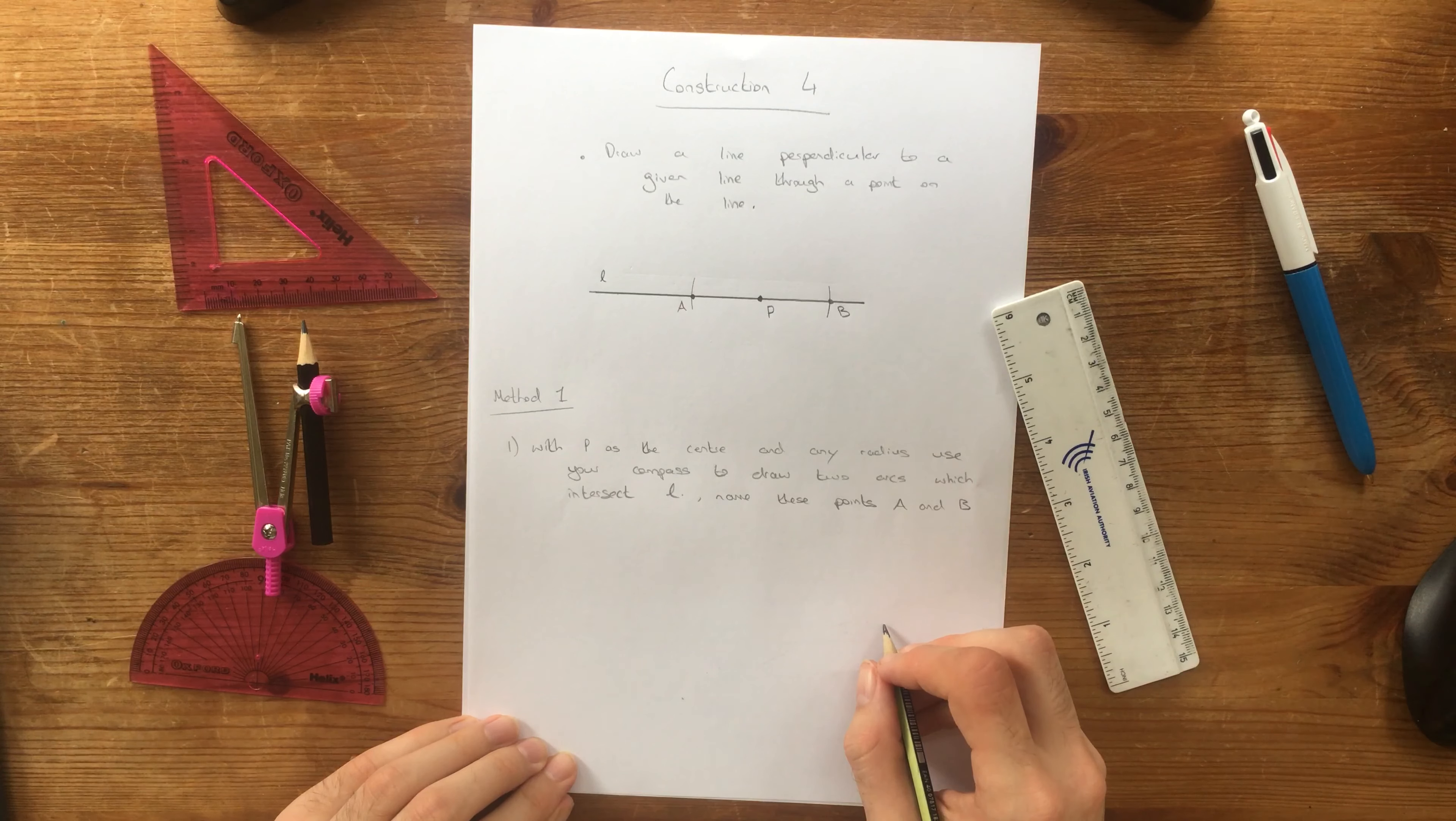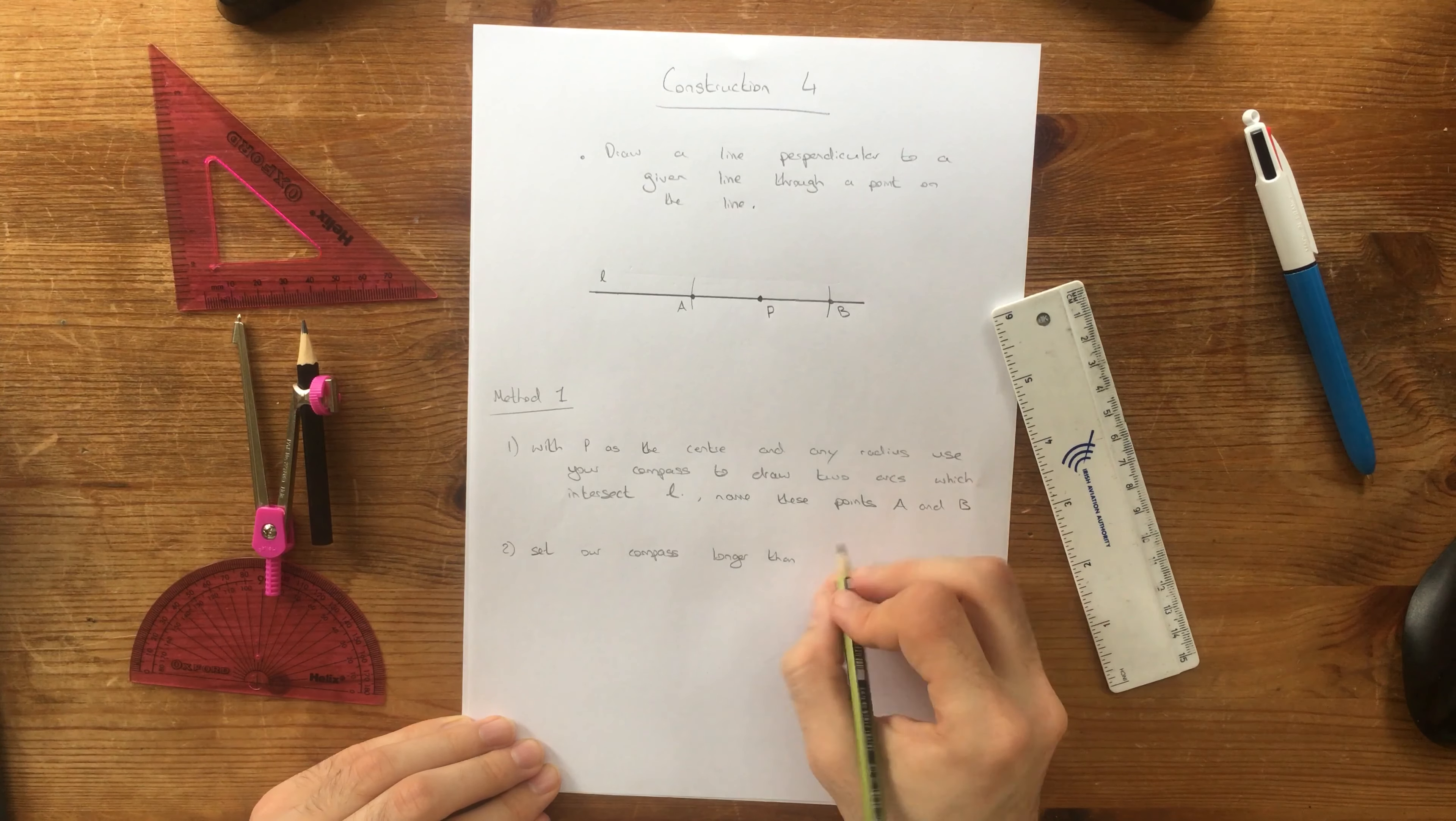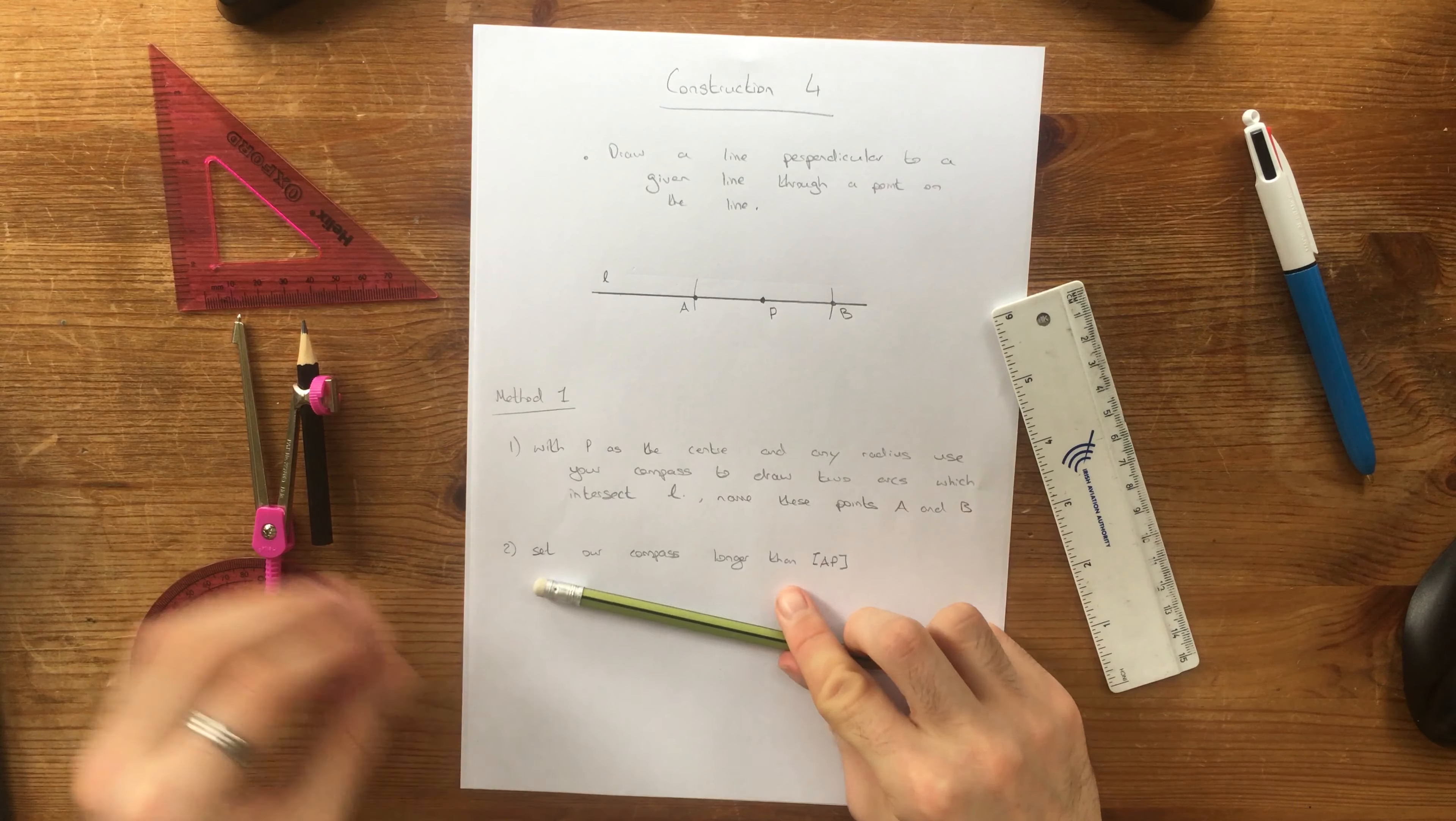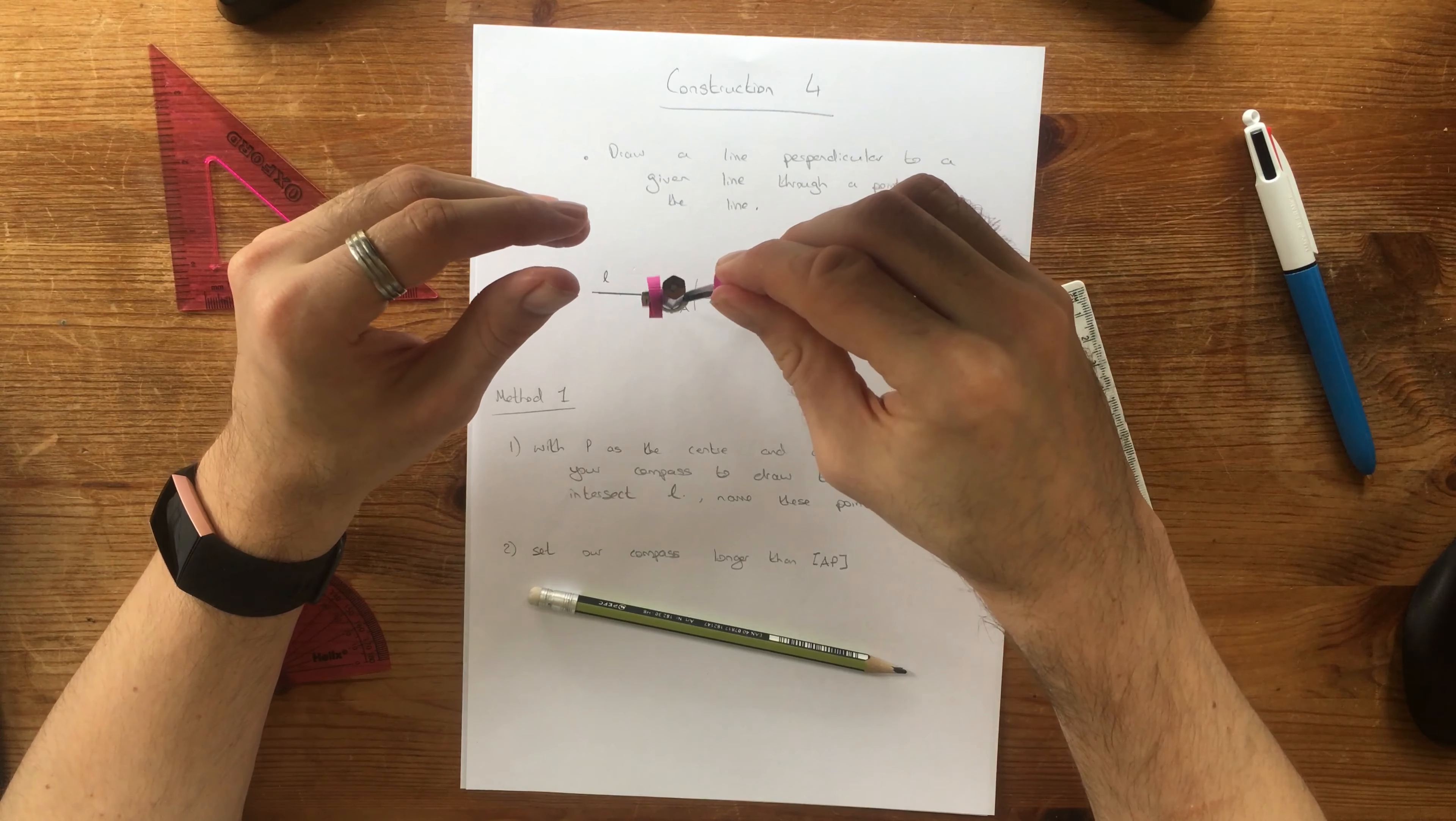So now we have to set our compass longer than the line segment A, P. So we'll do that straight away. And that just means that we have this distance here, it's going to be longer than that. So some bit longer than that. Okay, so I think that's enough. That's further than A, P.